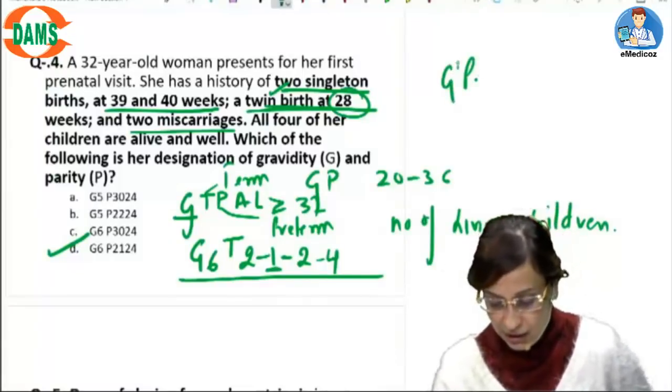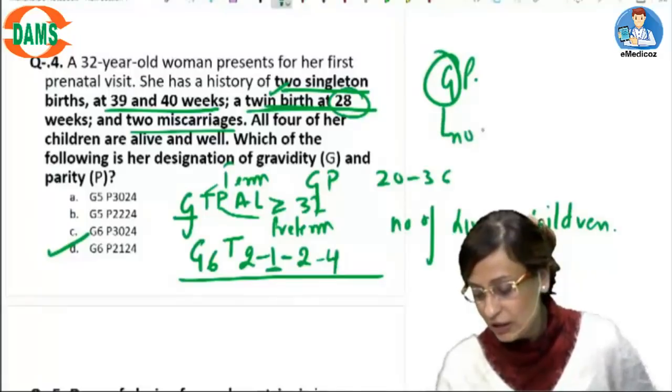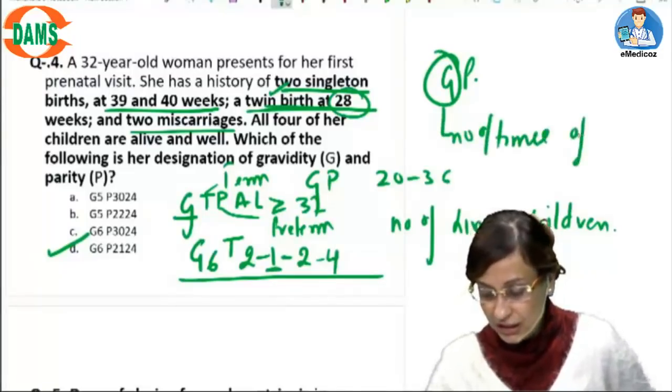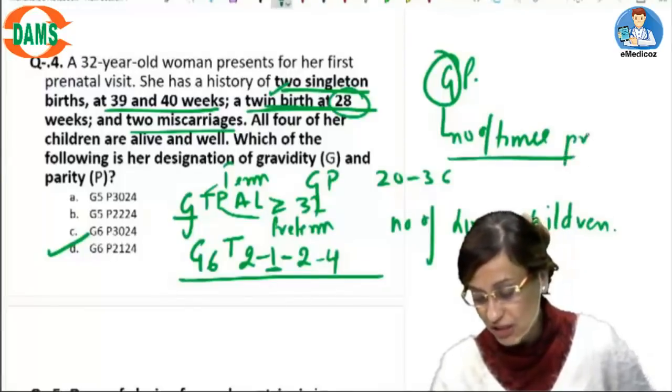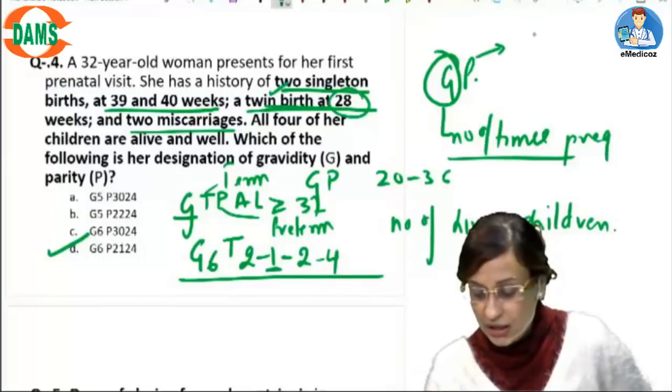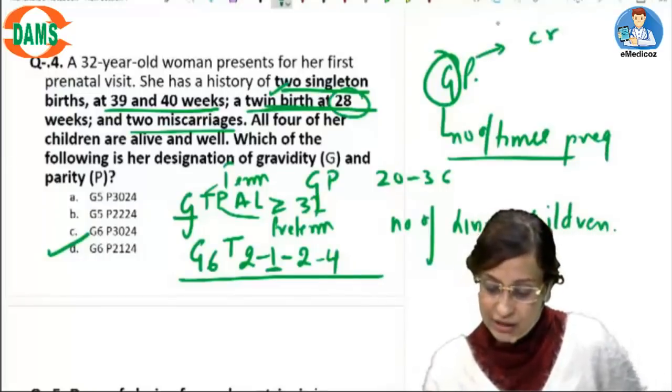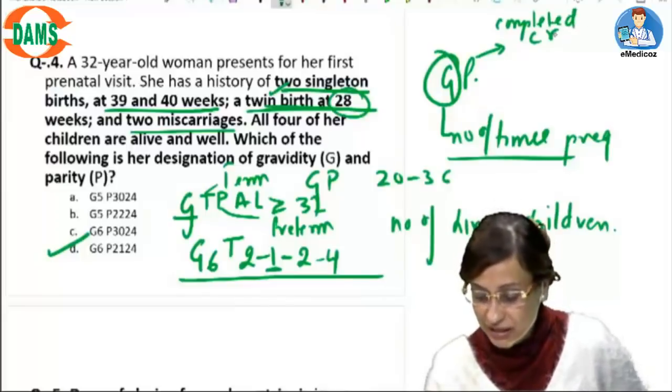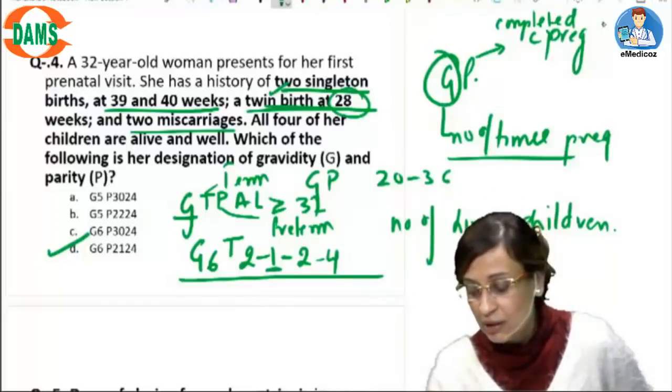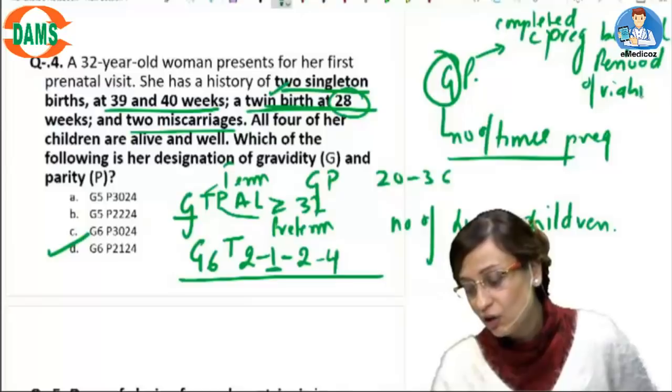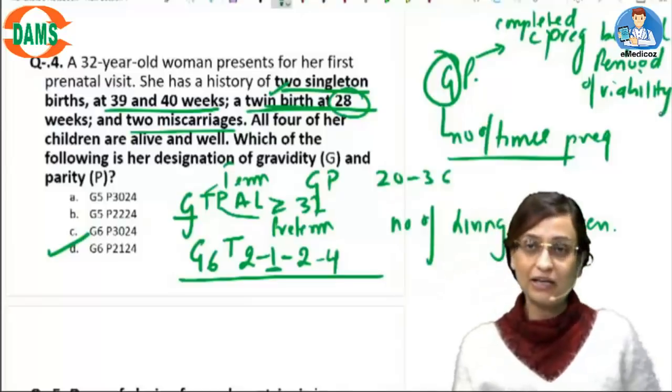Please remember, normally when you write Gravida and Para, Gravida means the number of times the woman has been pregnant. It is again not the number of children. It is the number of times she has been pregnant and current pregnancy is included in it. Para is pregnancies that were completed. So it includes only completed pregnancies. Completed pregnancies, not children, beyond period of viability. Which means Para will not include the current pregnancy.